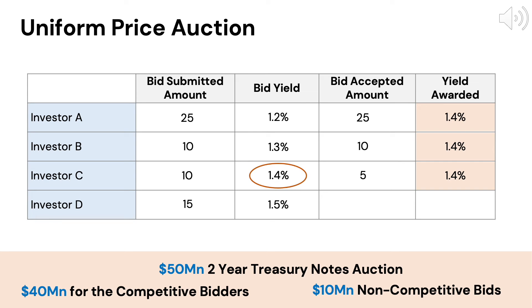You can see that all successful investors have essentially obtained the same yield. Hence, this auction type is called a Uniform Price Auction Method. Since Investor D's bid yield of 1.5% was higher than the stop-out yield of 1.4%, Investor D does not get awarded any Treasuries at the auction.